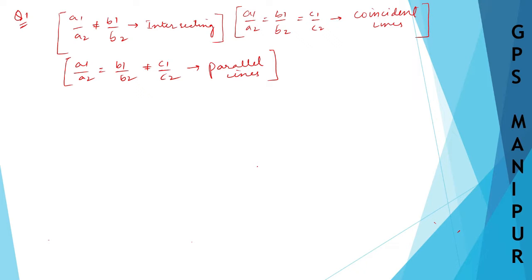Now we are doing Exercise 4.1, Question Number 1, Roman Number 2. Let me write down the question. The question is 9x plus 3y plus 4 equals 0, and 18x plus 6y plus 8 equals 0. Solution: First, this is a1, b1, and c1.